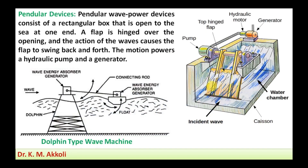The pendulum device consists of a rectangular box with one end open and facing the sea. A flap is hinged over this opening. About the hinge point, the flap swings back and forth as waves arrive. This motion drives a pump, which in turn drives a hydraulic motor to generate electricity. Because the flap moves like a pendulum, it is called a pendular device.